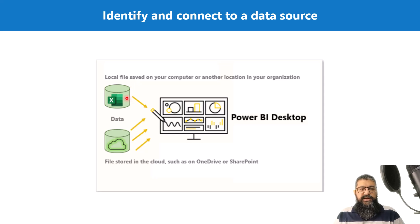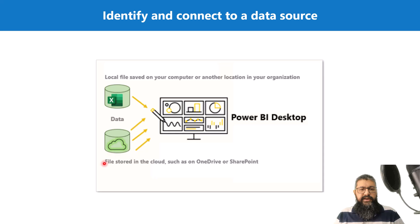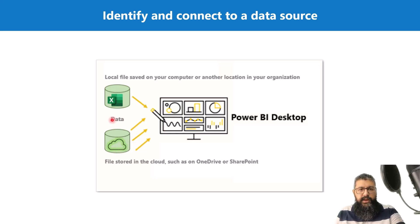Normally the data source could be either on-premise or in the cloud. On-premise data sources include local files saved on our computer or any other location within our local network, which could be an organizational network or even a home network. If the data is not on-premise, it must be in the cloud — we could have files and databases stored in the cloud. To connect to a cloud data source, you need internet available.